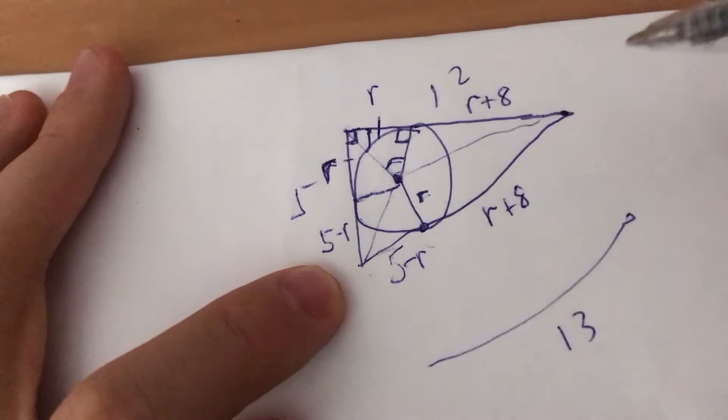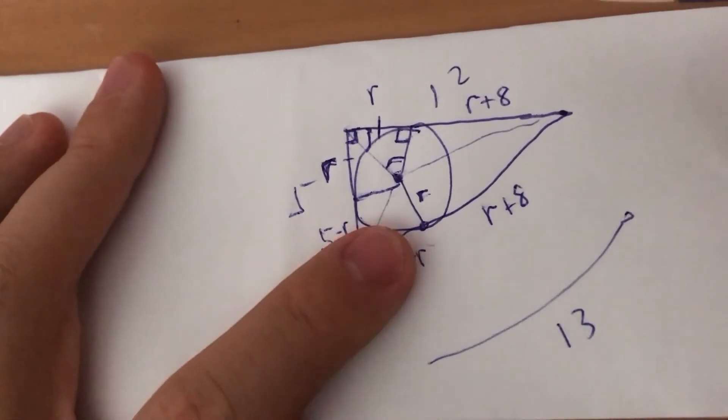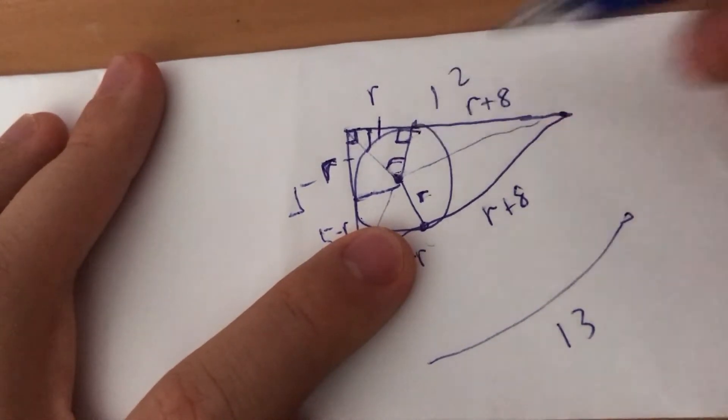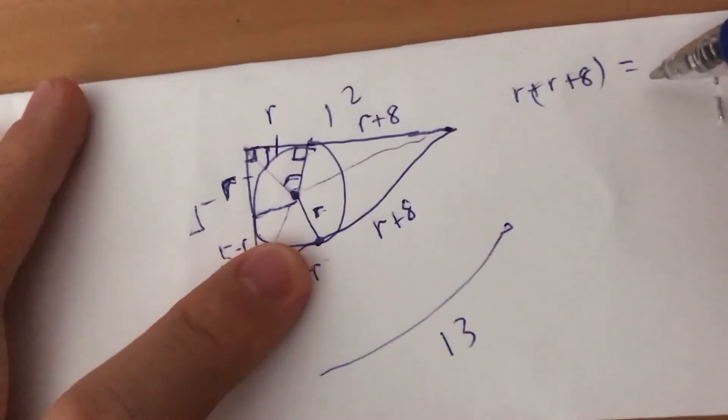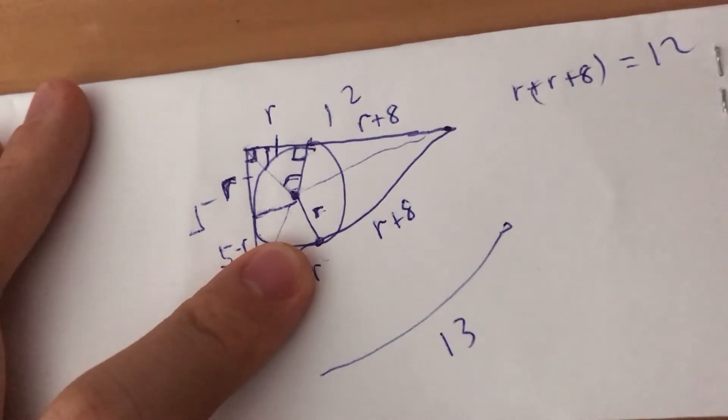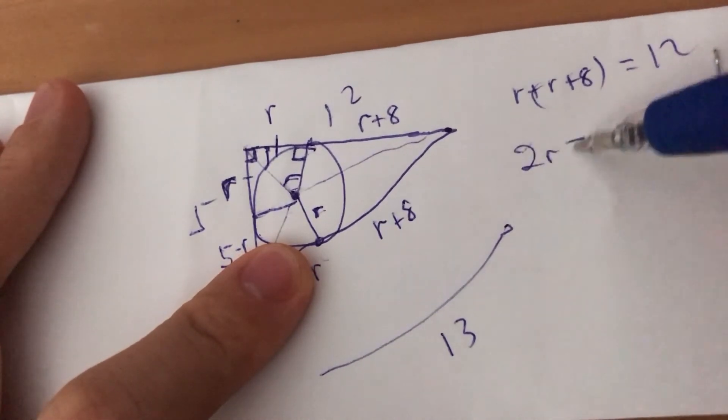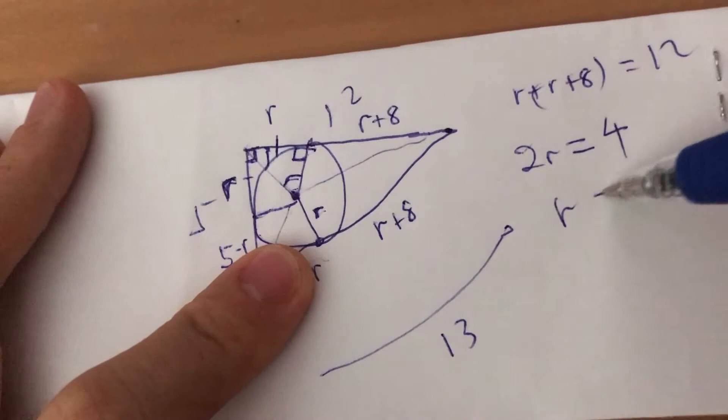But now we have an extra piece of information. So now we have that R plus R plus 8 is equal to 12. So actually 2R is equal to 4. And R is equal to 2.